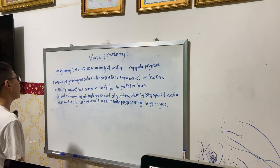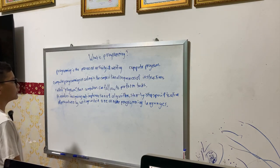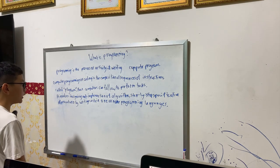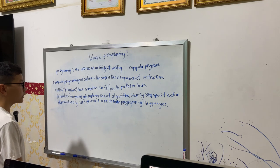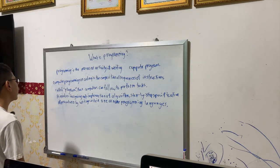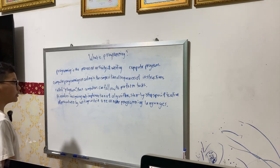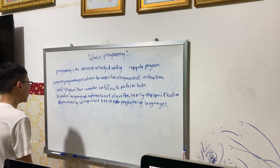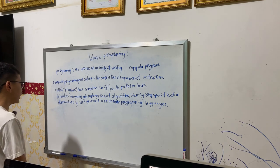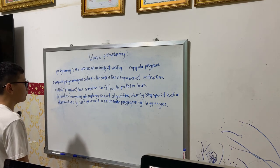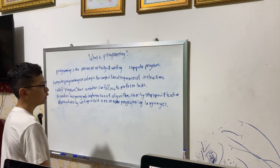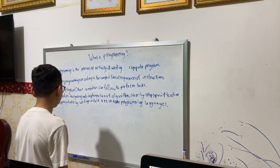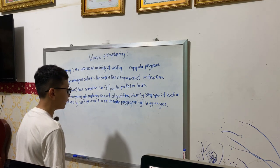What is programming? Computer programming or coding is the composition of sequences of instructions called programs that computers can follow to perform tasks. It involves the designing and implementation of algorithms, step-by-step specifications of procedures by writing code in one or more programming languages.